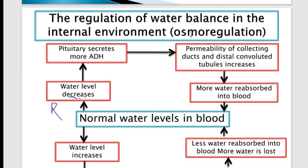We are saying there is a decrease, so the last statement must be increase, rise, or more — anything related to increase. Because we started with a decrease. Now the two steps are done. I need to know the gland, which hormone it produces, and the function of that hormone. Then the negative feedback mechanism, the osmoregulation, is done. Simple.